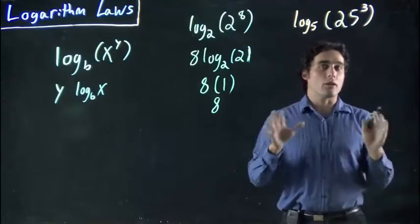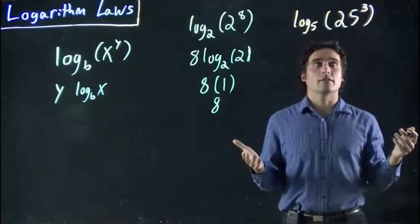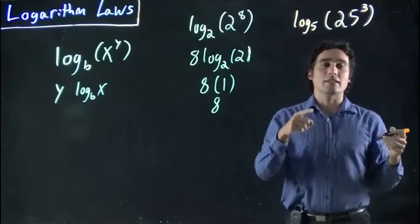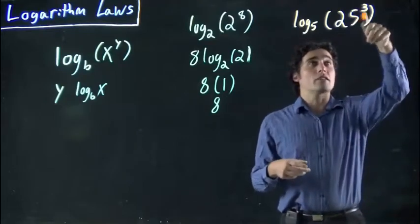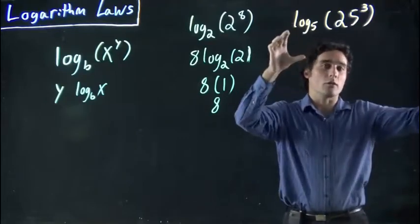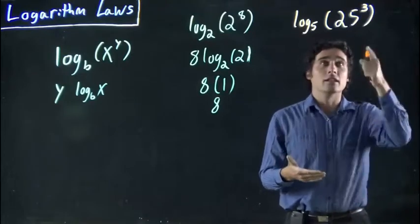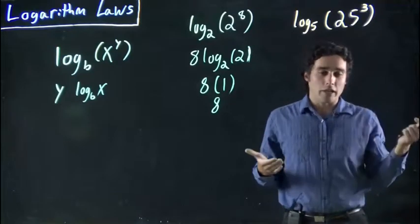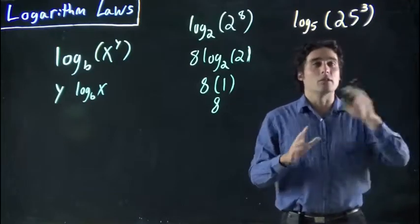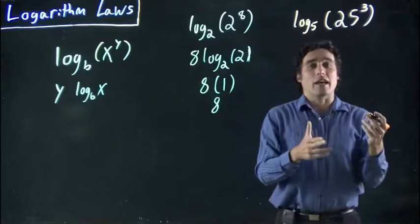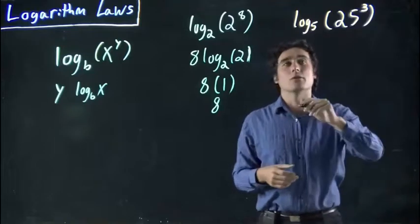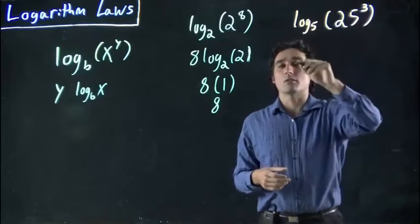This one's maybe not quite as obvious right away. Well, we can apply the same rule. If we wanted to, we could do 25 to the power of 3, get some huge, awkward, ugly number, and then spend a bunch of time with our calculator figuring out 5 to the power of what equals that number. We'd have to write down the number, and it would just be tedious. Why do that when there's this nice power rule to help us? We can just bring the 3 in front.